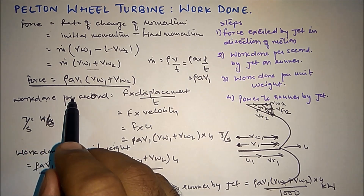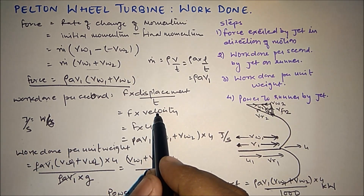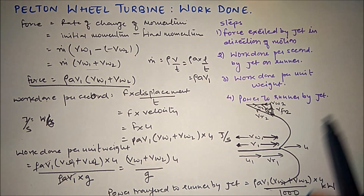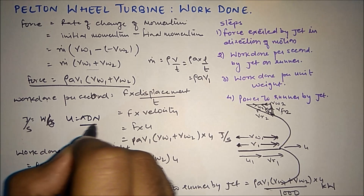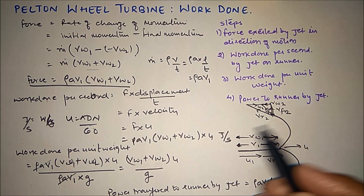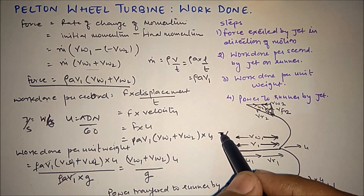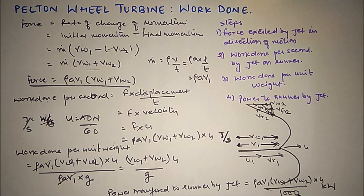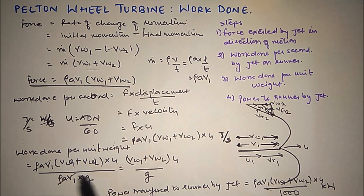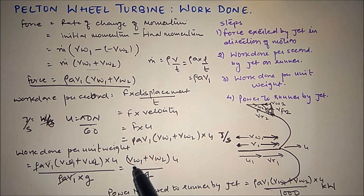Work done per second is force times velocity of the runner U, where U = pi*D*N/60 (D is the diameter of the runner/wheel). This gives joules per second, which is watts; divide by 1000 to get kilowatts — that is the power transferred to the runner. Work done per unit weight is work done per second divided by weight (rho*A*V1*g), so rho*A*V1 cancels and we get (Vw1 + Vw2)*U/g.